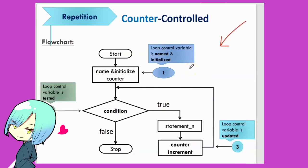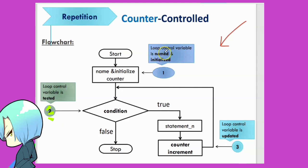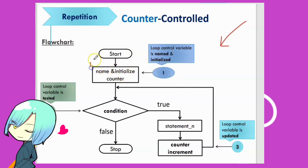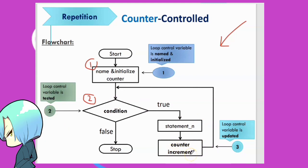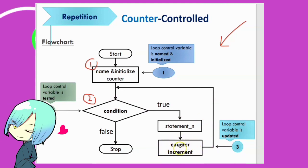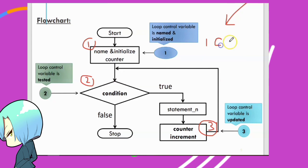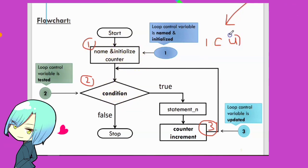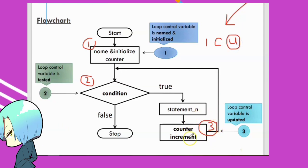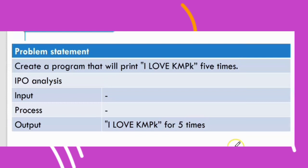For the flowchart, just add three elements: first, the loop counter variable is named and initialized; second, the loop control variable is tested with a condition; third, the loop counter variable is updated by incrementing or decrementing. Remember the guideline 'ICI' — I for initial value, C for condition, and I for increment or update.